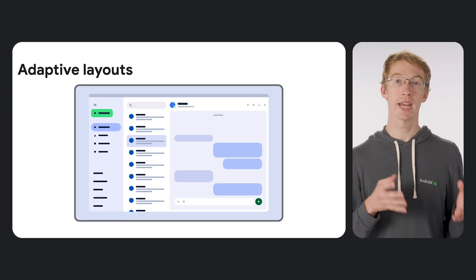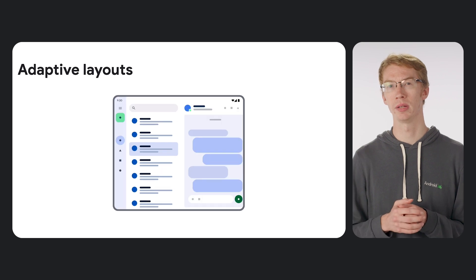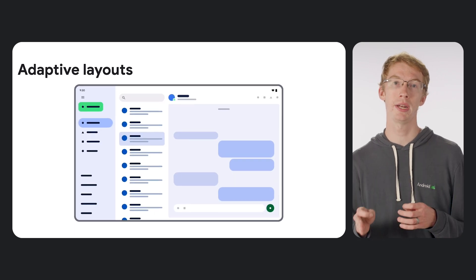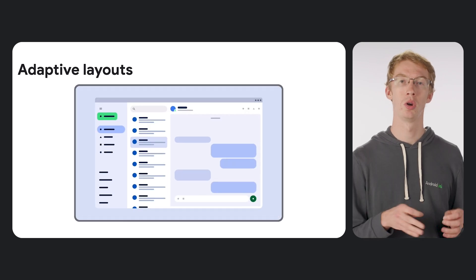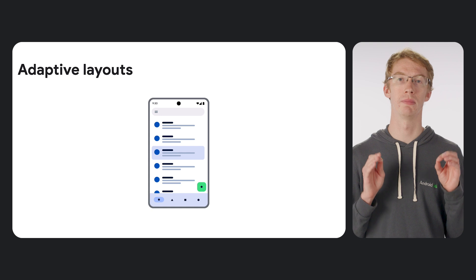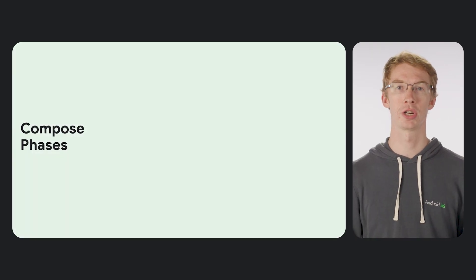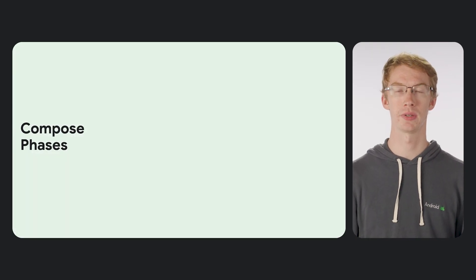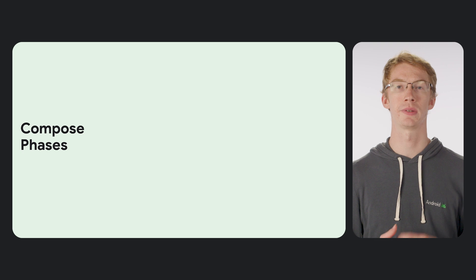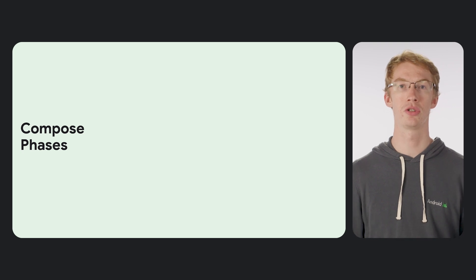Implementing adaptive layouts in Compose might seem trickier at first, because swapping components or hiding and showing them requires knowing how to work within Compose's phase system. Let's do a brief refresher of Compose's phases. There are three phases: composition, layout, and drawing.